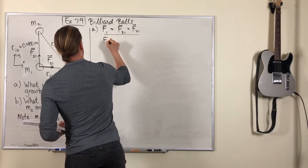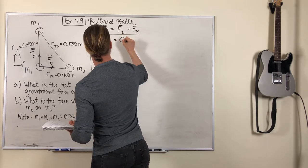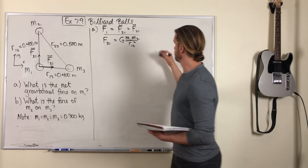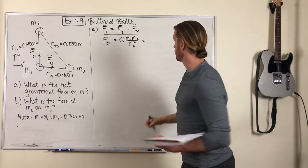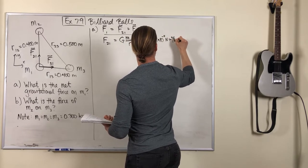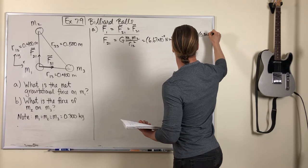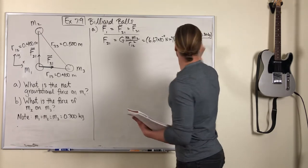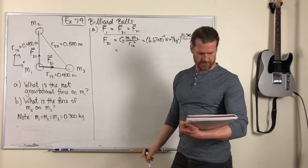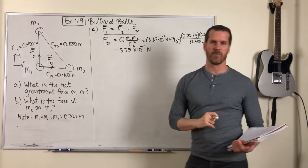So let's start with the magnitude of F21. That's the gravity force of mass 2 pulling on M1. It equals G M1 M2 over R12 squared. So we're given all these numbers. We know that G is 6.67 times 10^-11 newtons meters squared per kilogram squared. M1 is 0.3 kilograms. M2 is also 0.3. And the distance between them is 0.4 meters. When you put all that together, you get 3.75 times 10^-11 newtons.